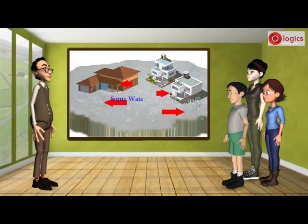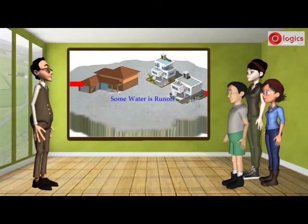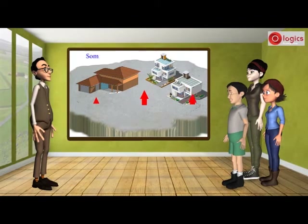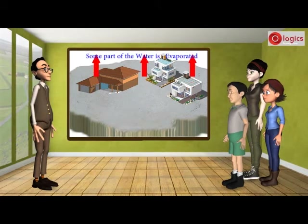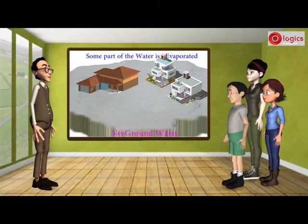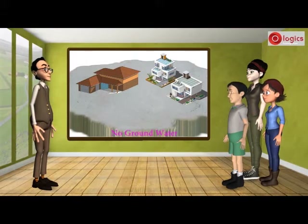Some water runs off, and some part of the water is evaporated. It means in those areas there is no groundwater, and therefore there will be water scarcity.